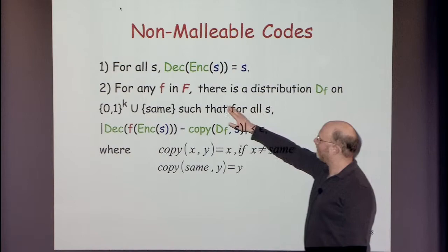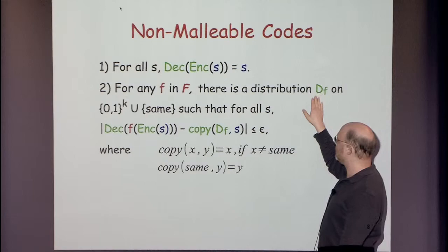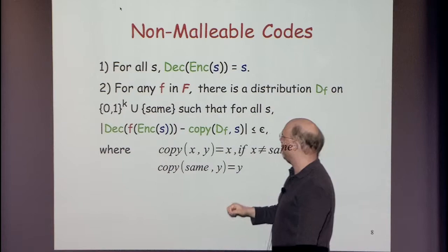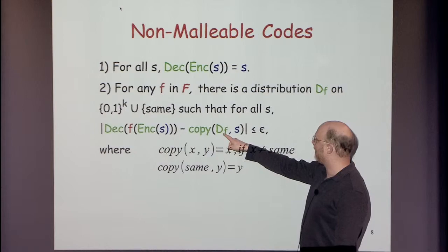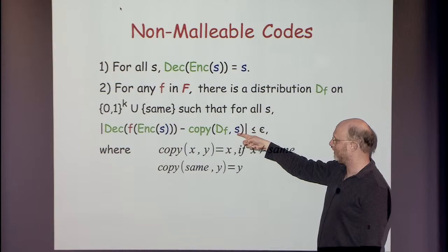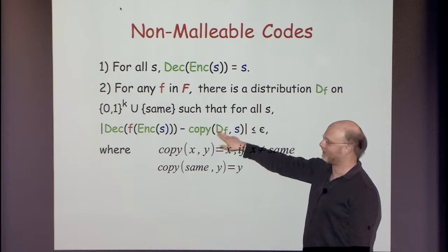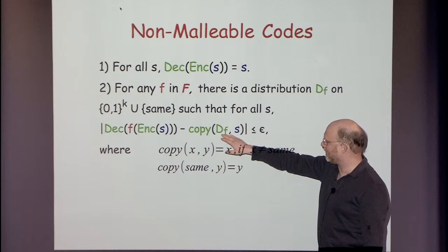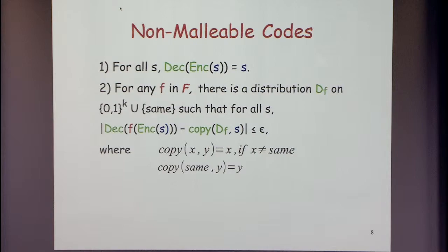The formalization says: for any tampering function, there's a distribution DF that doesn't depend on the message S — a distribution over all possible messages and the string 'same.' We have the copy function: if DF takes value 'same,' then copy(same, y) = y, so the decoder just equals S. If we never output 'same,' then copy is just the first string, meaning the decoder outputs the distribution DF. So either it outputs a distribution independent of S, or it outputs S — a convex combination of those two scenarios.